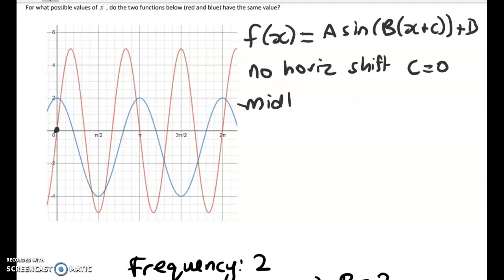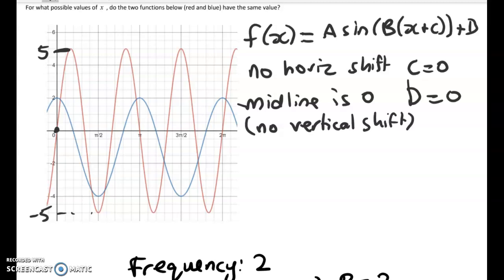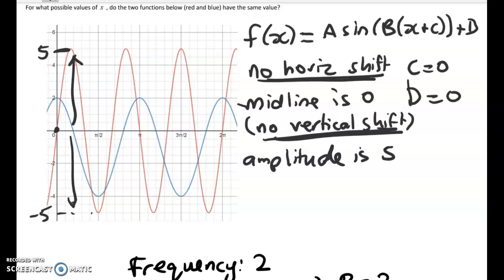What's the midline? This is a nice easy one with no vertical shift as well. The top value here is 5, the bottom value is negative 5. Midline is 0, d is equal to 0, no vertical shift. Remember we want you to be talking about the features, so it's important that you don't write just d equals 0, you need to write that there is no vertical shift, no horizontal shift. Communicate what you're thinking clearly. The amplitude is 5, because it goes up 5 here, and down 5 to the bottom. So the amplitude is 5, a is equal to 5.